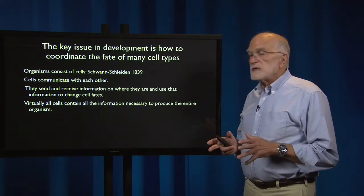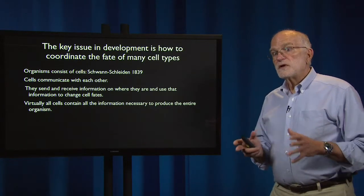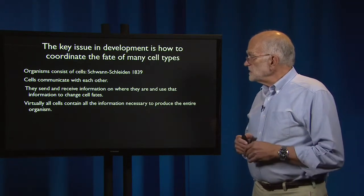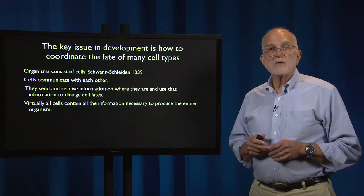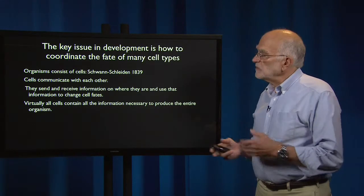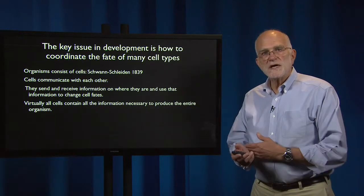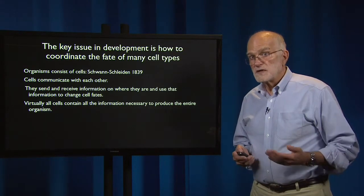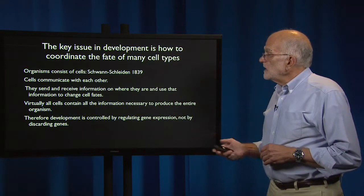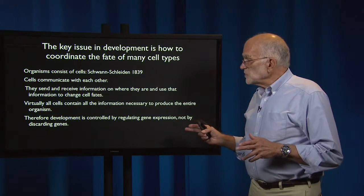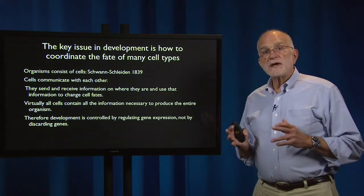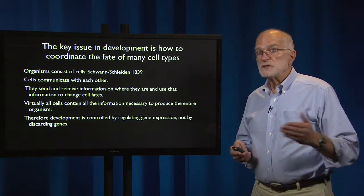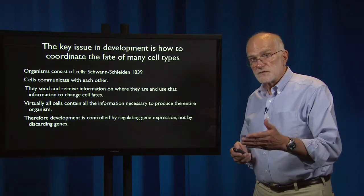Virtually all cells in the eukaryotic body contain all the information necessary to produce the entire organism. The only reason we say 'virtually' is that we have a few cells, like red blood cells, that do not contain a nucleus. Therefore, development is controlled by regulating gene expression, not by discarding genes in order to get different tissue types.